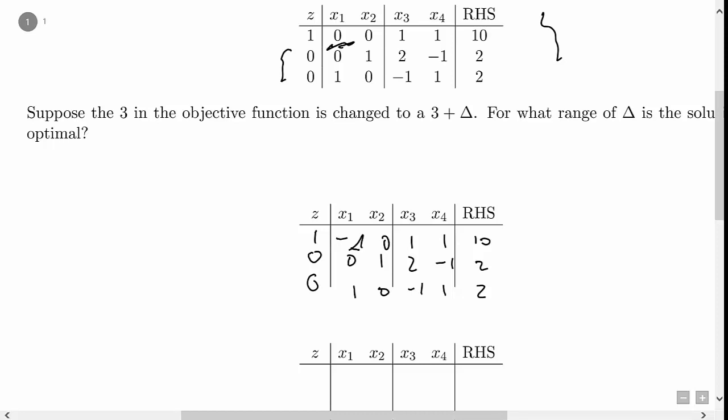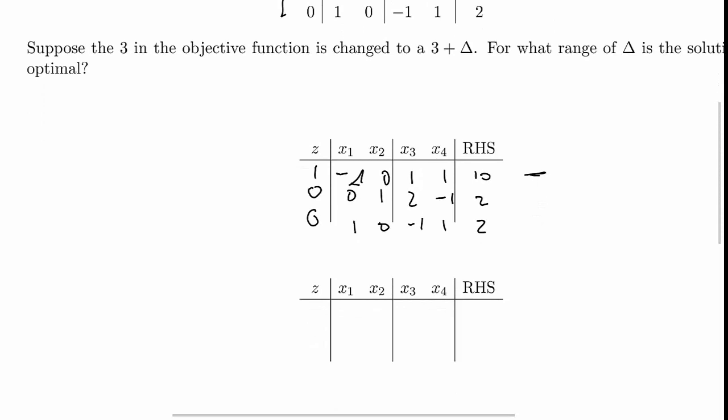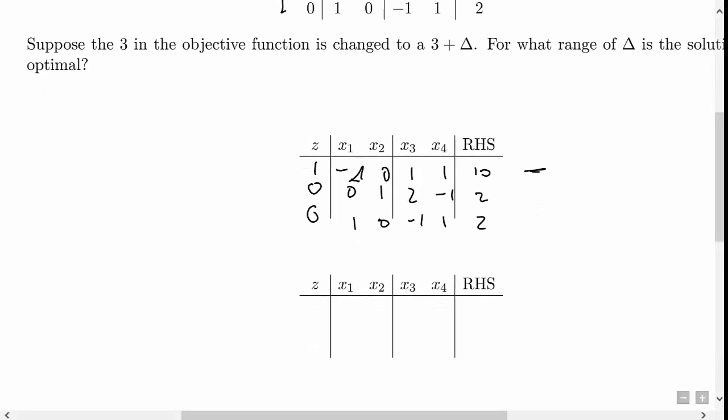So now the only question is, is this basic feasible solution optimal? To check for optimality, we want to look at row 0 of the table and check if all the entries are greater than or equal to 0. But before we do that, we have to put this table in proper Gaussian form. So basically what has to happen is that x1 and x2 are the basic variables here, so the entries in row 0 above them need to be 0. This negative delta needs to be changed to a 0.